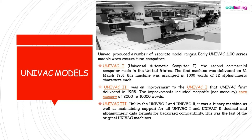UNIVAC 2, the Universal Automatic Computer 2, was an improvement of the UNIVAC 1, first delivered in 1958. The improvements include magnetic, that is non-mercury, memory. So while UNIVAC 1 was composed of vacuum tubes, UNIVAC 2 improved upon this with magnetic non-mercury memory, and its core memory consists of 2000 to 10000 words. Unlike the UNIVAC 1, which ranged from 1000 words and had 12 alphanumeric characters.